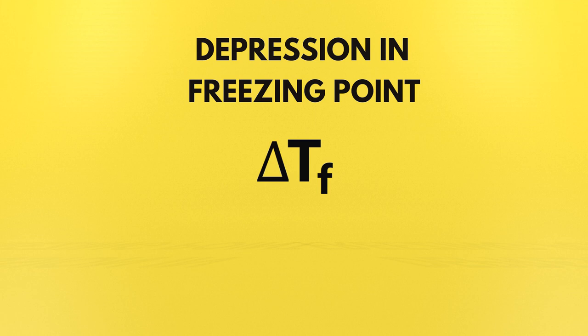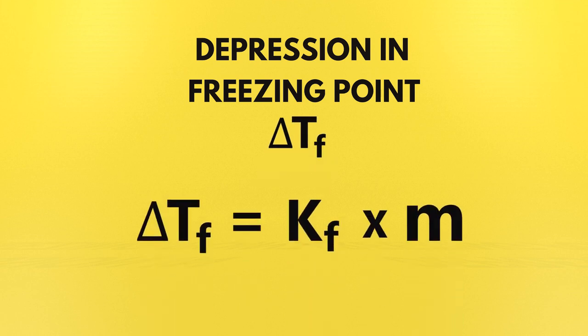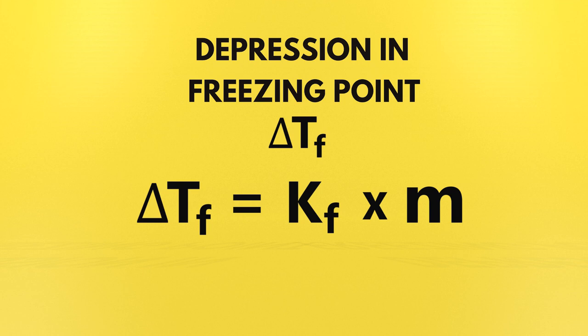Depression in freezing point को हम short में लिखते हैं delta Tf. और इसका हमारे पास एक formula होता है, and that is delta Tf is equal to Kf into m. इस वीडियो में हमारा aim यह होगा कि हम इस formula तक पहुँचें और इस formula को derive करने के लिए जितनी चीज़ें पता होनी चाहिएं, वो हम step by step study करेंगे।